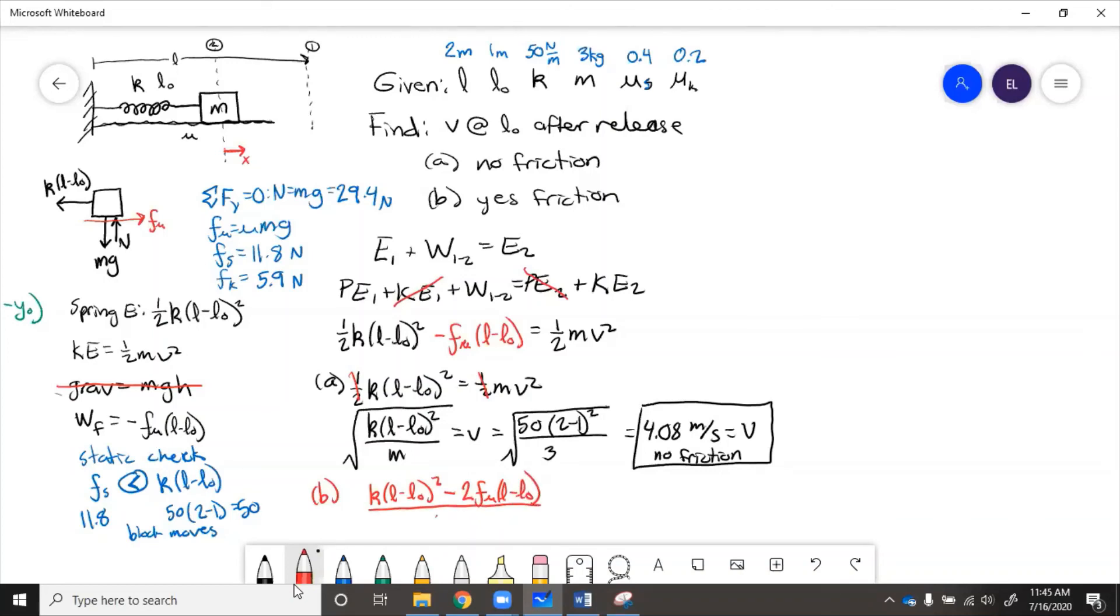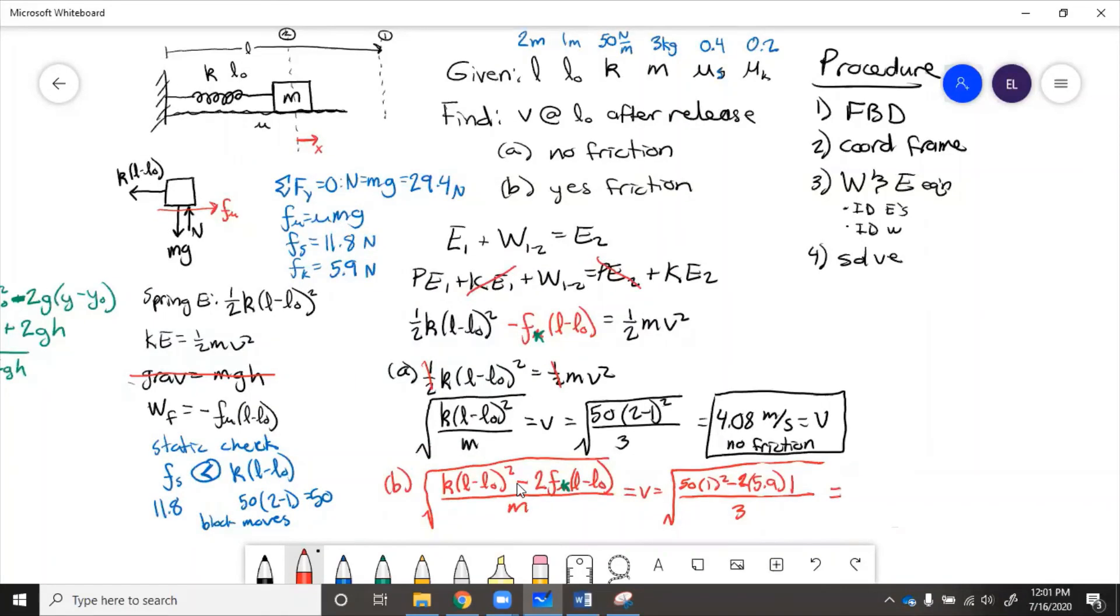For part B with kinetic friction because it's moving, we'll use kinetic. So that equals 3.56 meters per second with friction.